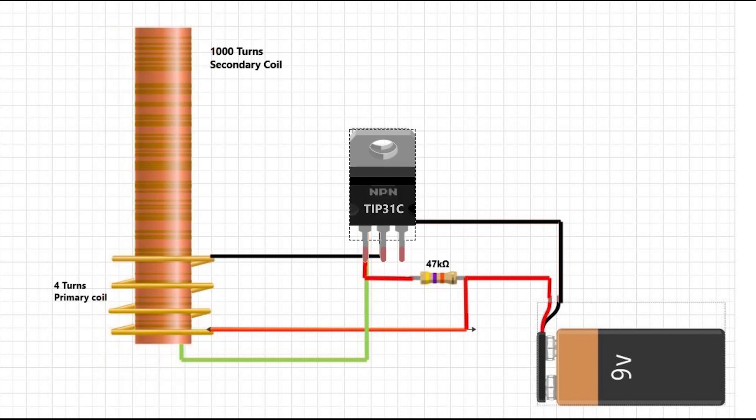And here we use this NPN transistor as a switch. When we supply positive at its base, it will turn on the switch and when we supply negative at its base, it will turn off the switch.